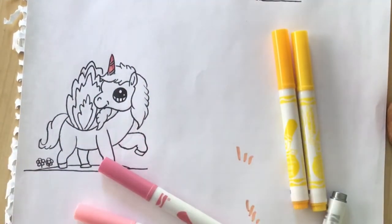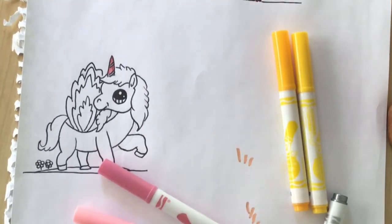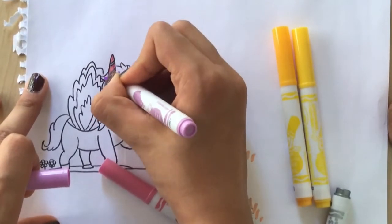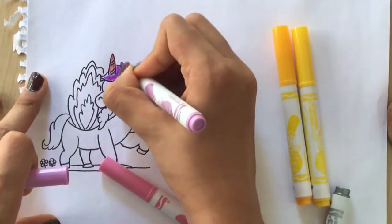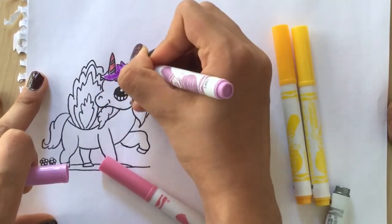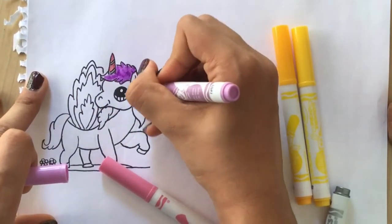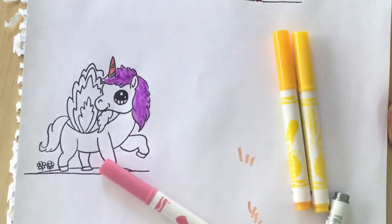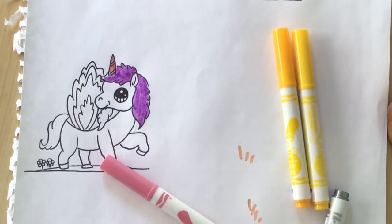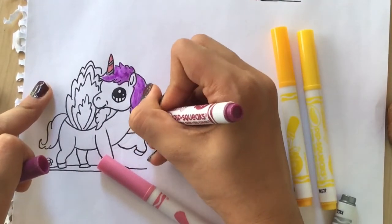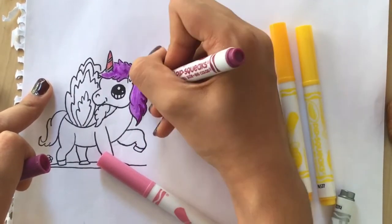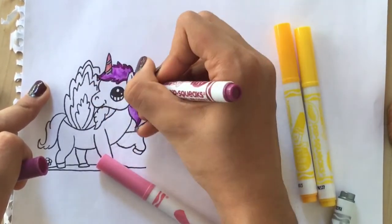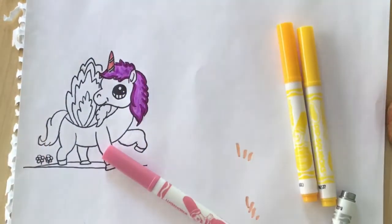And now the hair. The hair is going to be Petite Rose. And now use Grape Jam for a shadow.